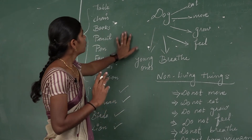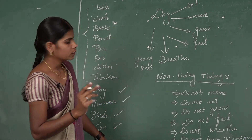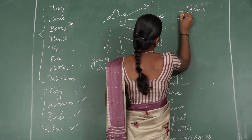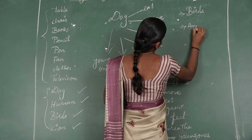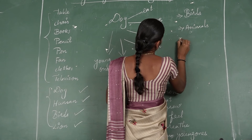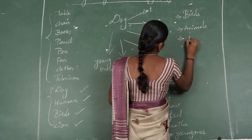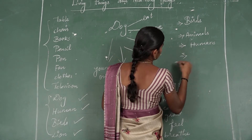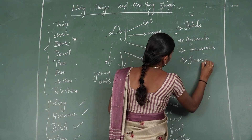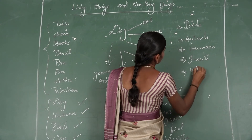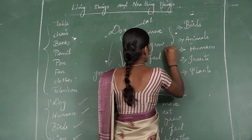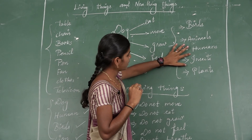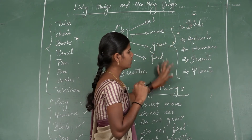So what are the living things? Living things are birds, animals, humans, insects, and plants. These are called living things.